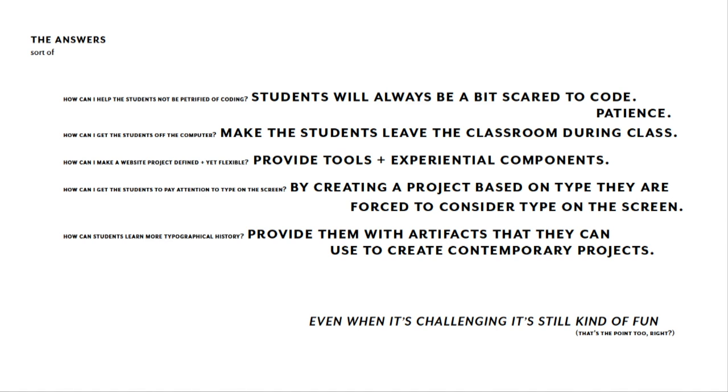How to make the website project defined and flexible — providing tools and experiential components was helpful. How to make them pay attention to type — creating a type-based project forced that onto them. How to integrate typographical history — when you provide artifacts it forces them to research history and create contemporary projects. Not everybody has a Carey collection or an Adopt-a-Font program, but every institution has some sort of archive or library, so you can still pull things out for students to work on. You don't always need great archives — you can figure out how to do it.